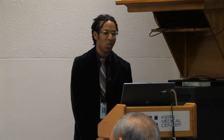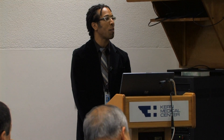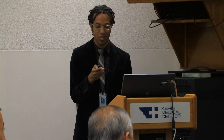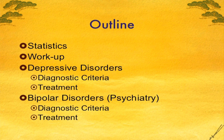Today I'm going to talk about an overview of mood disorders. As an outline, I'll first mention some statistics, then discuss a workup for various mood disorders. I'll focus on depressive disorders and bipolar disorders, outlining the diagnostic criteria for both and the treatment algorithms. I've put psychiatry in brackets when mentioning bipolar disorders because a psychiatrist should probably be involved in patient care, especially when dealing with bipolar disorders.